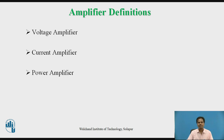We are going for amplifier definitions. The voltage amplifier: we can define a voltage amplifier as an amplifier which amplifies mostly the voltage level of the input signal and provides output voltage and current signal. The voltage amplifier mainly amplifies the voltage level of the input signal, producing a higher-level output signal.